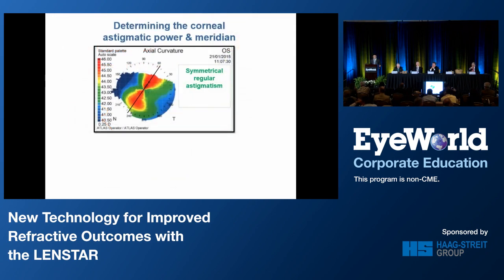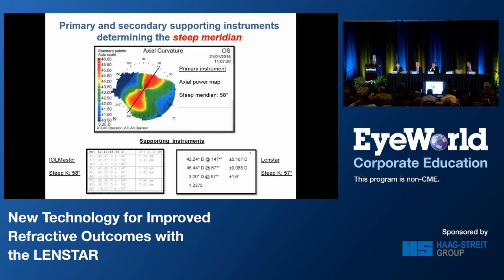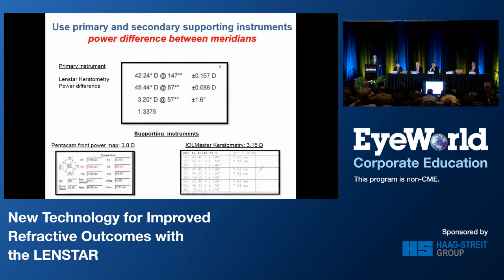Before determining the corneal astigmatic power and meridian, it is essential to make sure that we are dealing with a symmetrical and regular astigmatism. One should follow the methodology by Warren Hill of using primary and secondary supporting instruments, and we do that for determining the steep meridian. We repeat the same process for the power difference between the meridians.